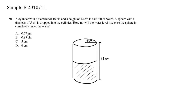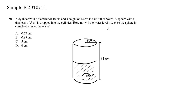A sphere with a diameter of 5 centimeters is dropped into the cylinder. This is a pretty small sphere. The diameter is 5 centimeters, so the radius of this sphere is 2.5 centimeters, because the radius is half the diameter. The sphere is completely submerged under the water.